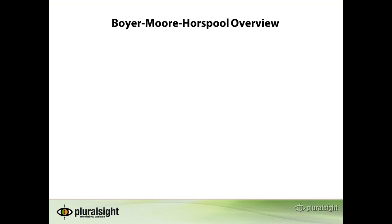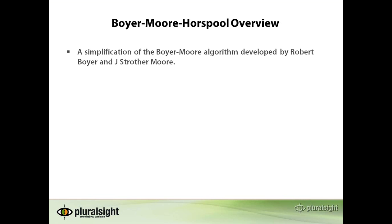The Boyer-Moore Horspool algorithm is a simplification of the Boyer-Moore algorithm developed by Robert Boyer and Jay Moore. At a very high level, this search algorithm tries to minimize the overall cost of the search by skipping as many characters as possible.